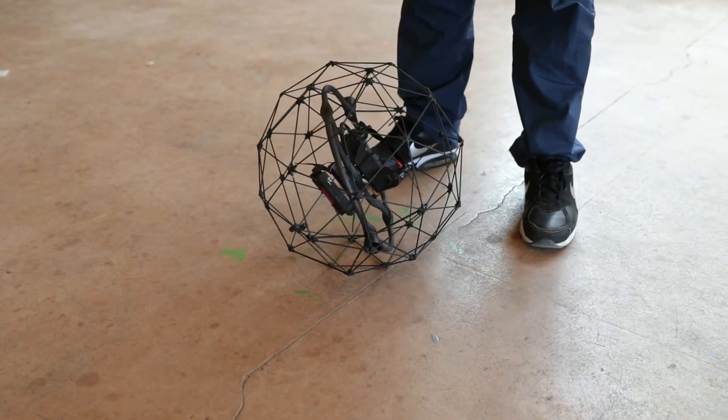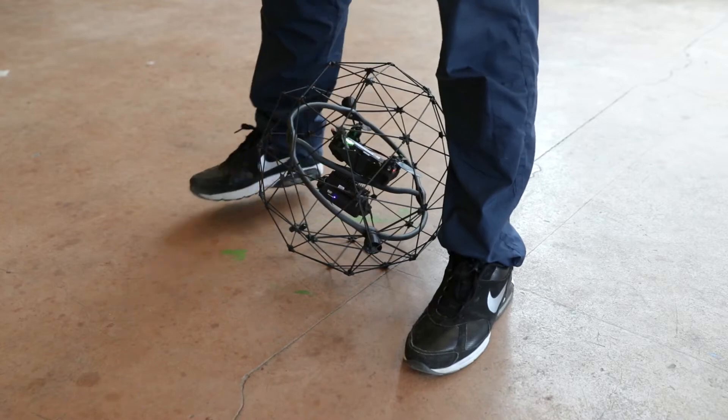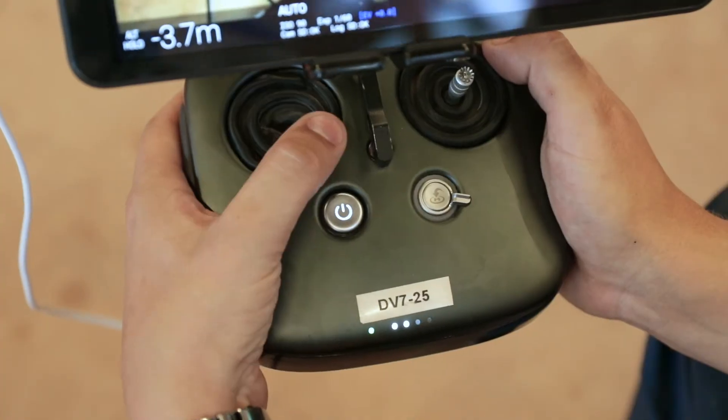Place the drone on the ground in front of you then hold it lightly between your feet. Perform the arming sequence.